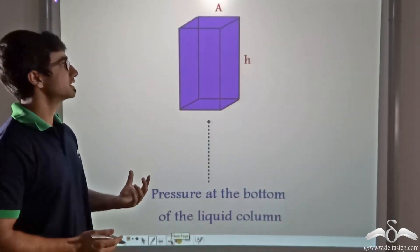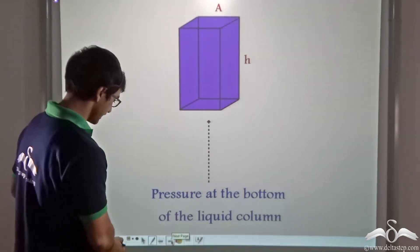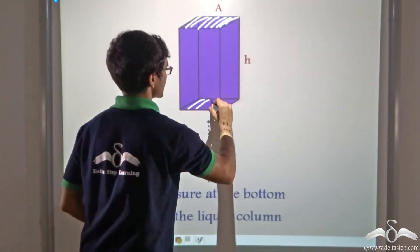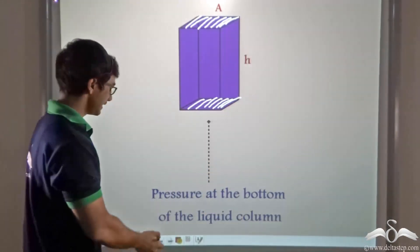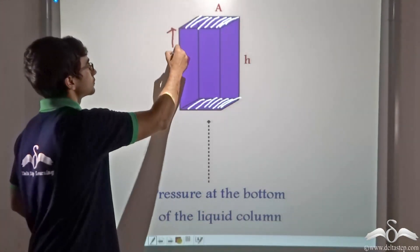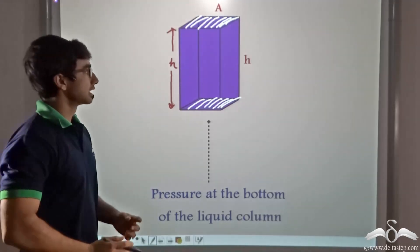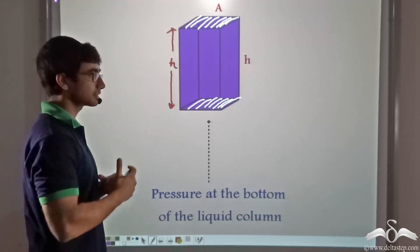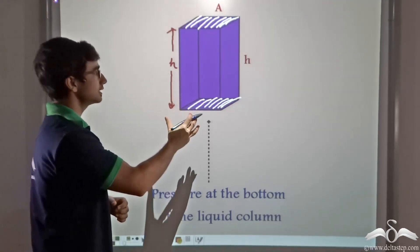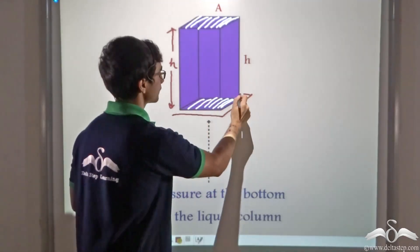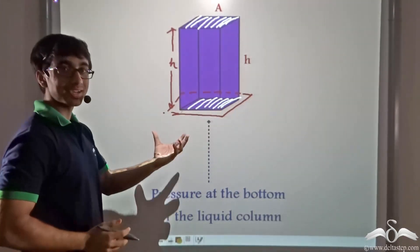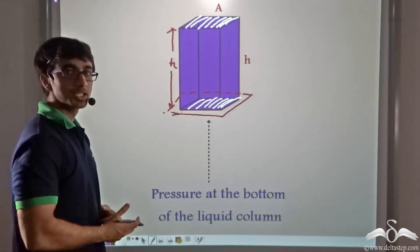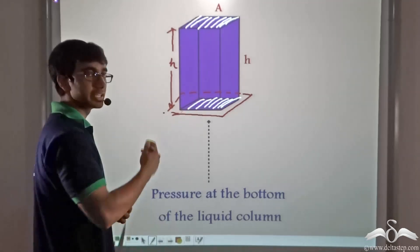We have considered a vertical liquid column that has a cross-sectional area of A and a height H. Since this liquid column has a specific area and height, it occupies a certain amount of space. This liquid column will be exerting a force at its bottom, and since the bottom has an area, there will also be pressure at the bottom of the liquid column. Let us find out how to calculate that pressure.